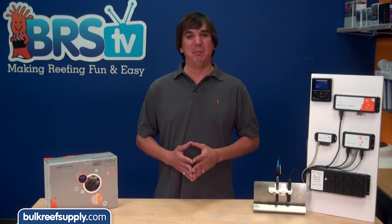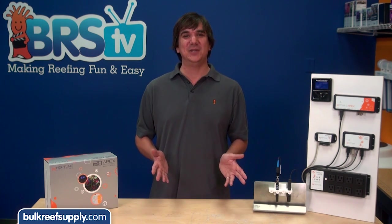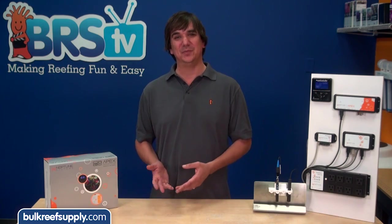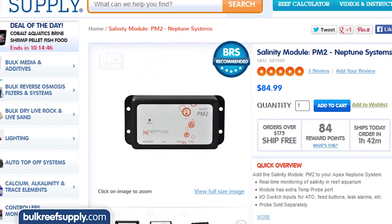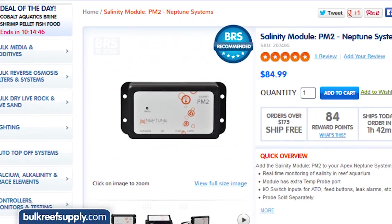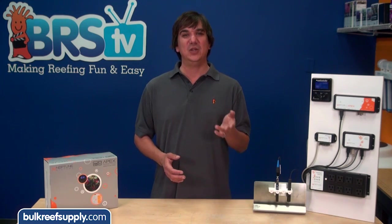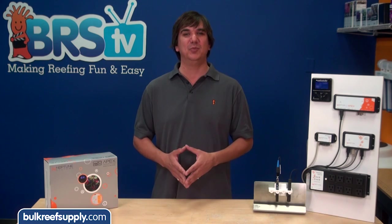This week we are going to set up a PM2, otherwise referred to as the Apex Probe Module 2. The primary purpose of this module is to measure and control conductivity, which represents the salinity of the tank. We will cover a couple of main uses for the PM2 and some simple programming.